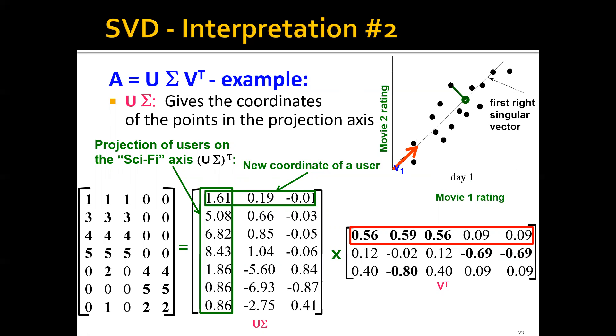So after we perform this SVD, how do we get the new coordinates for each user? Here we have seven users, right? How do we get the new coordinates for these seven users? We can do this by simply multiplying the two matrices, U and sigma. This is the matrix, the product of these two matrices. The first row actually represents the new coordinate of the first user, and the first column is the projection of these seven users on the sci-fi axis. So graphically, it means the location of all these points when they are projected to this V1 axis.